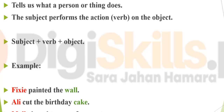The sentence structure for active voice is subject plus verb plus object. For example: Fixie painted the wall. Ali cut the birthday cake. Molly bought a new furry cat. All subjects are active and performing the action — Fixie is painting, Ali has cut the cake, and Molly bought a new furry cat.